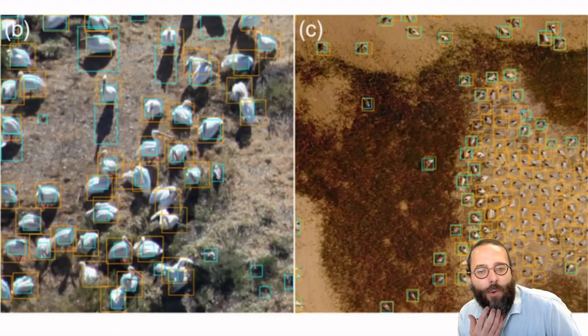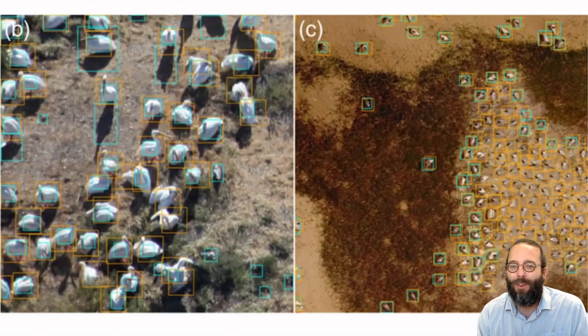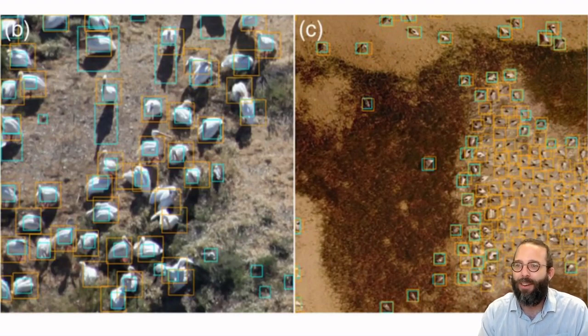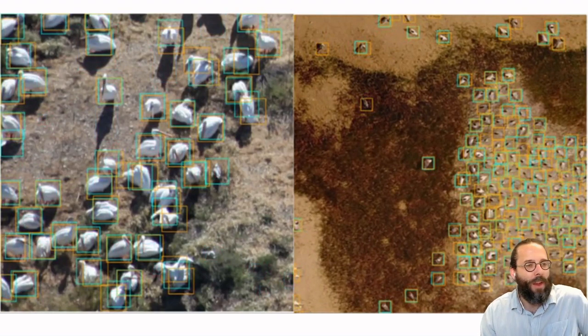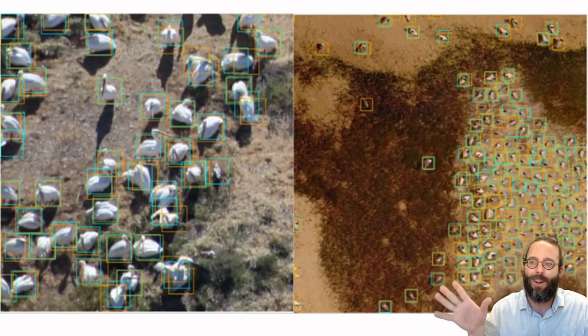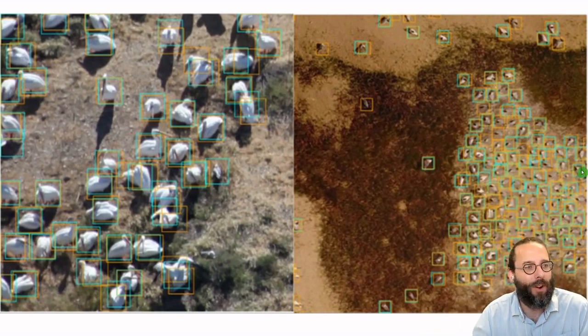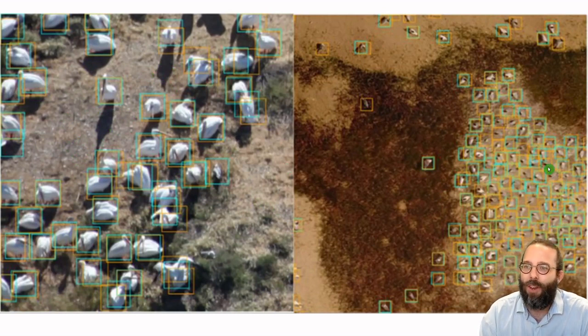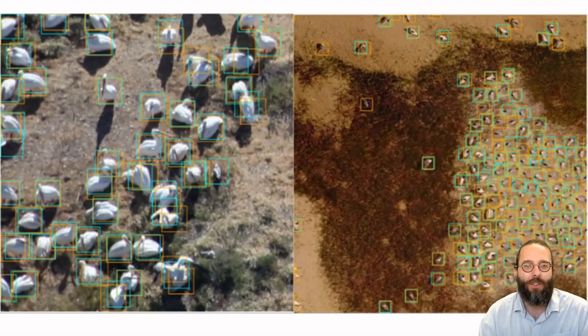The good news is that if we give the neural net just a few labels from the actual site, things get a lot better. So these are the same predictions, but now the algorithm's been fine-tuned on a thousand labels from the focal site. And so we fit on everything else, we fine-tune on a thousand labels from the focal site. And now it's learned to ignore shadows and it does a better job of dealing with this challenging background that it hadn't seen before.